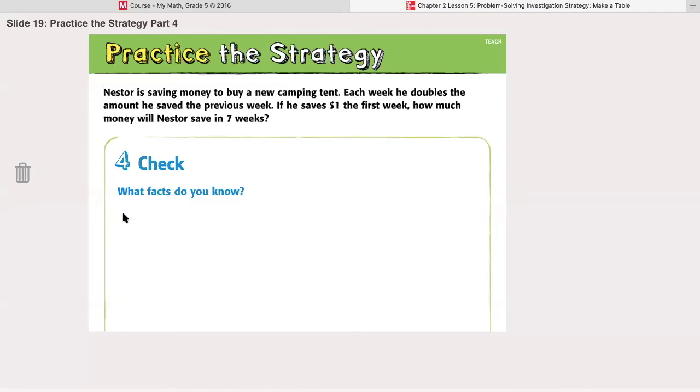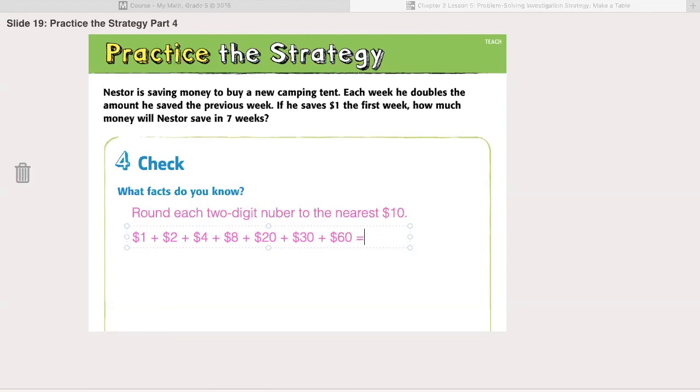How can we check to see if our answer is reasonable? We can round each two-digit number to the nearest ten dollars and see if our approximate answer is close to our exact answer. Okay, so sixteen dollars rounds up to twenty dollars. Thirty two dollars would round down to thirty if we're rounding to the nearest ten. Sixty four dollars would round down to sixty, and that makes it a little easier to add.